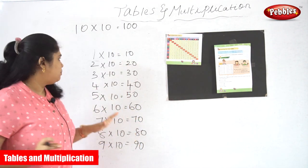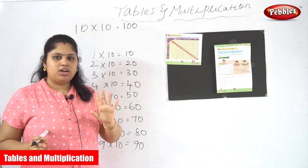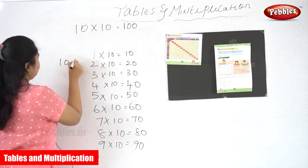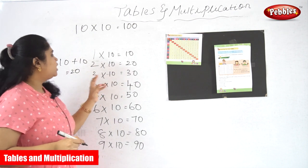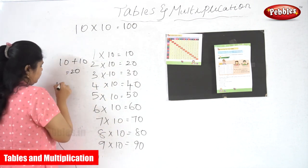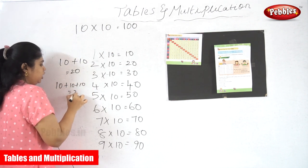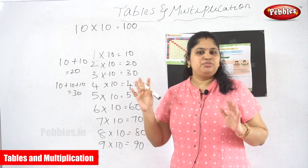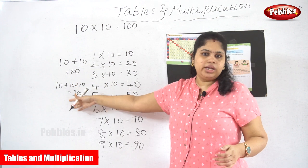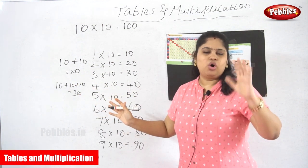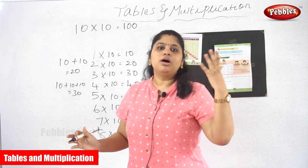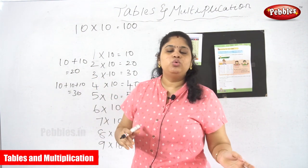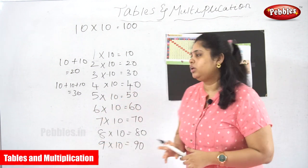If you want to read the table in a proper manner: if 10 comes 1 time, the answer is 10. If 10 comes 2 times, 10 plus 10 equals 20. If 10 comes 3 times, 10 plus 10 plus 10 equals 30. This is the actual behind process of the 10th table. We have already seen the skip method and how a number comes a certain number of times.